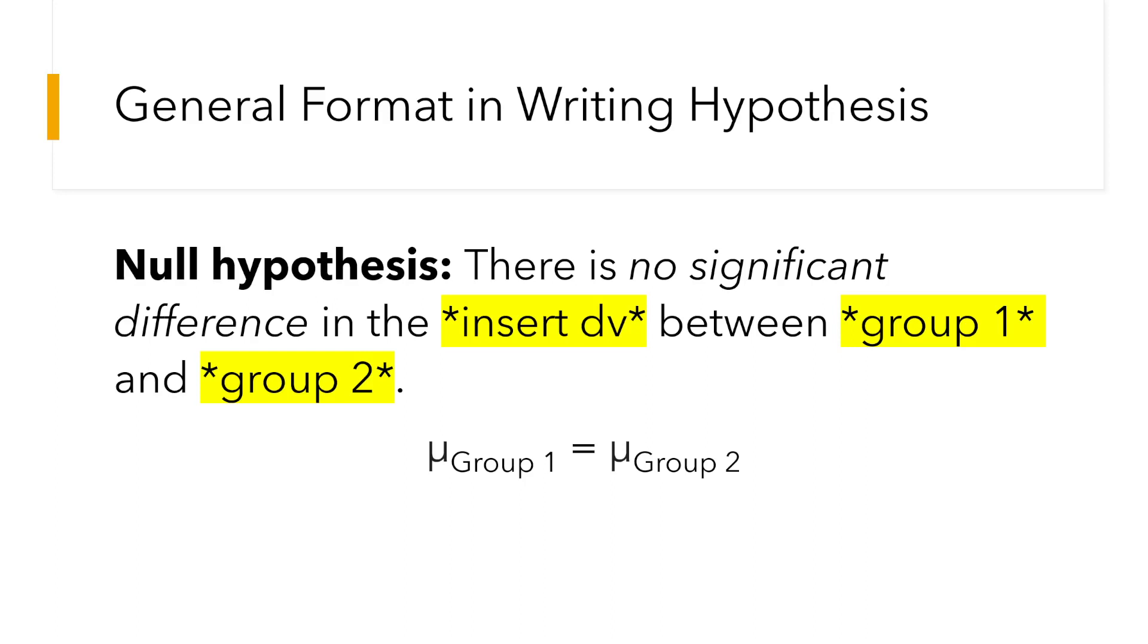So, for example, maybe you can say there is no significant difference in the antibodies between vaccinated people and unvaccinated people. There's no significant difference in the alertness between those who drink coffee and those who did not drink coffee. So, in symbol, that would be the mean of group 1 or condition 1 is equal to the mean of group 2.